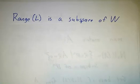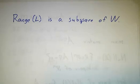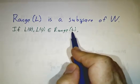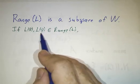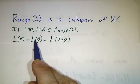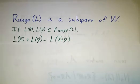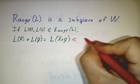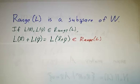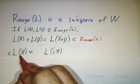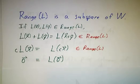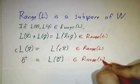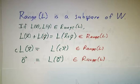The range, as we defined it, is a subset of W — it's all possible outputs and outputs are in W. But in fact it's a subspace. Anything in the range can be written as L of something in V. So L(x) and L(y) are typical elements of the range, and L(x) + L(y) = L(x+y), so the range is closed under addition. A multiple of something in the range is L(cx), so that's also in the range. And 0 = L(0), so it's also in the range. Since it's closed under addition, under scalar multiplication, and contains 0, it's a subspace.